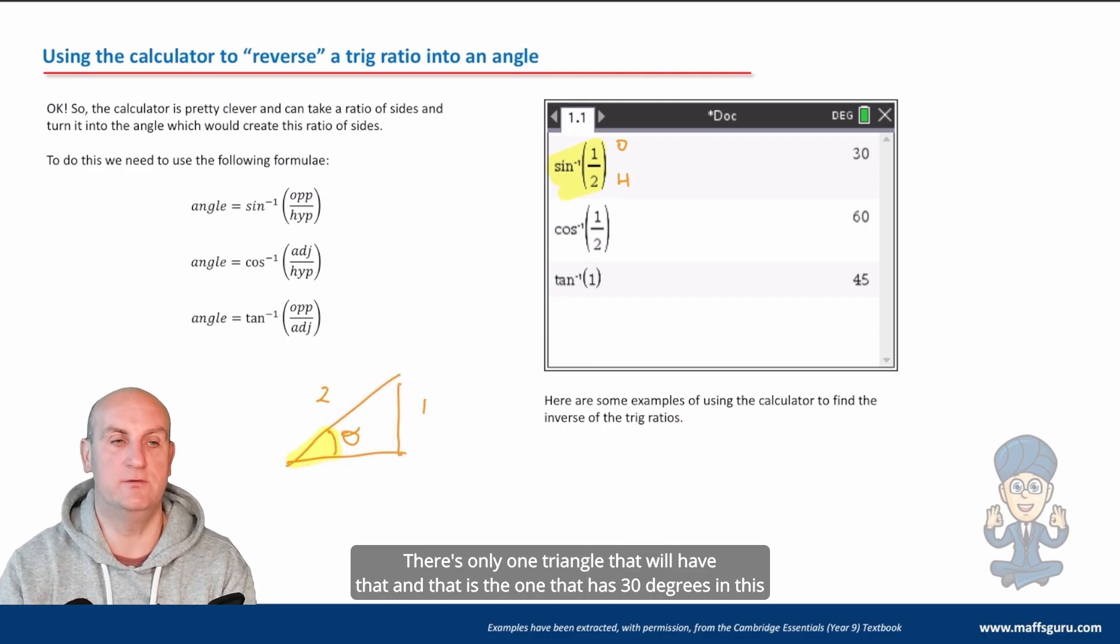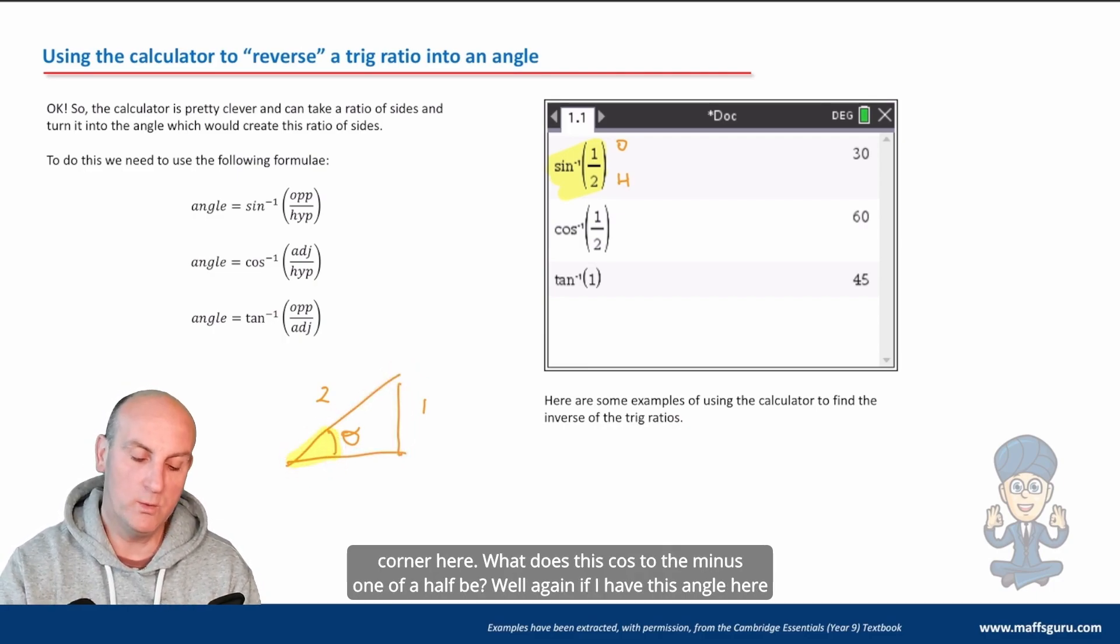And that is the one that has 30 degrees in this corner here. What does this cos to the minus one of a half be? Well, again,